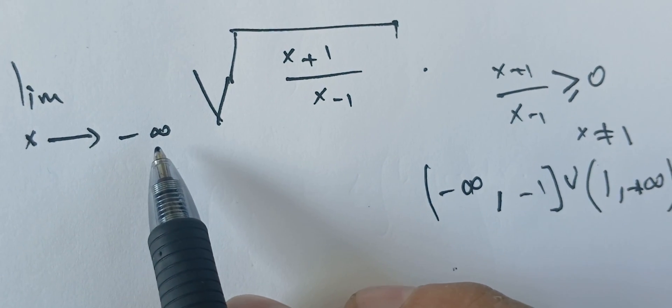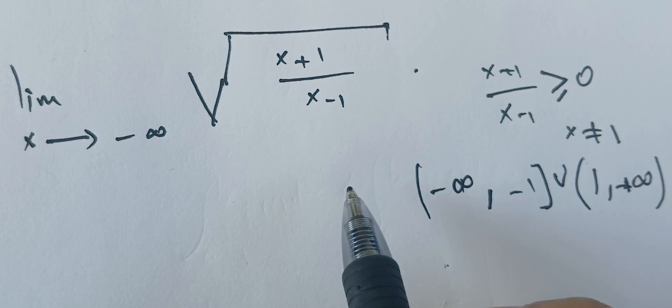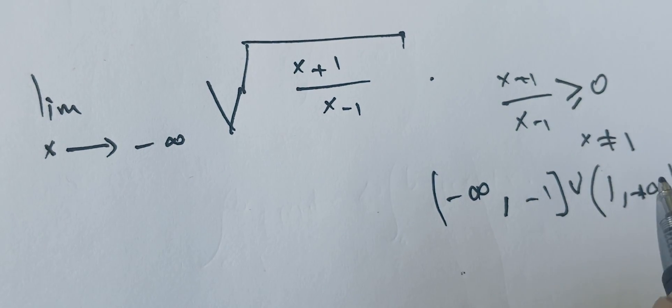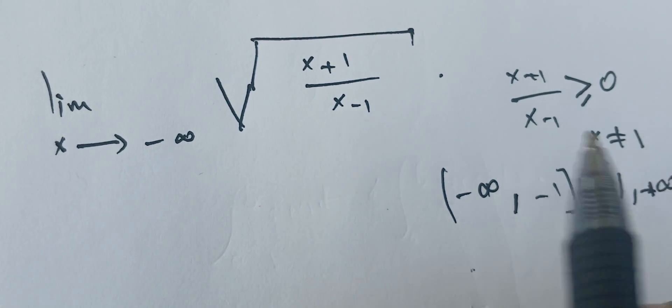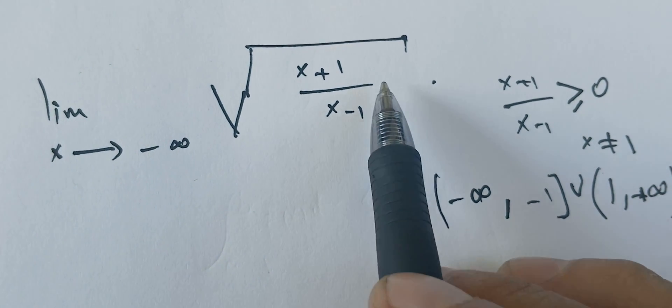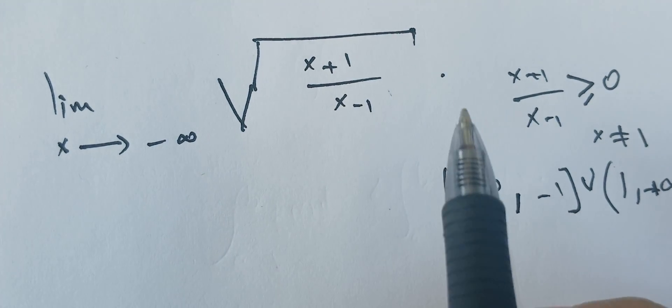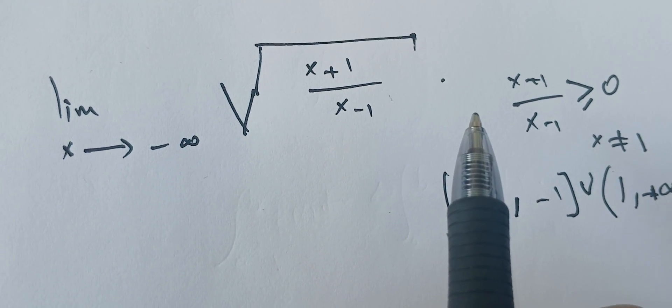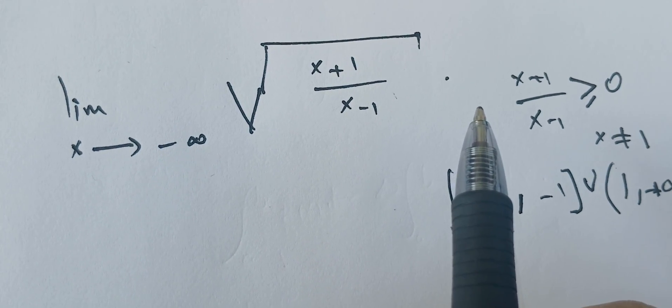Now to find the limit at minus infinity, we can notice that the square root is a continuous function, and therefore we can enter the limit inside, assuming that this limit exists. It does exist because we can compute it.